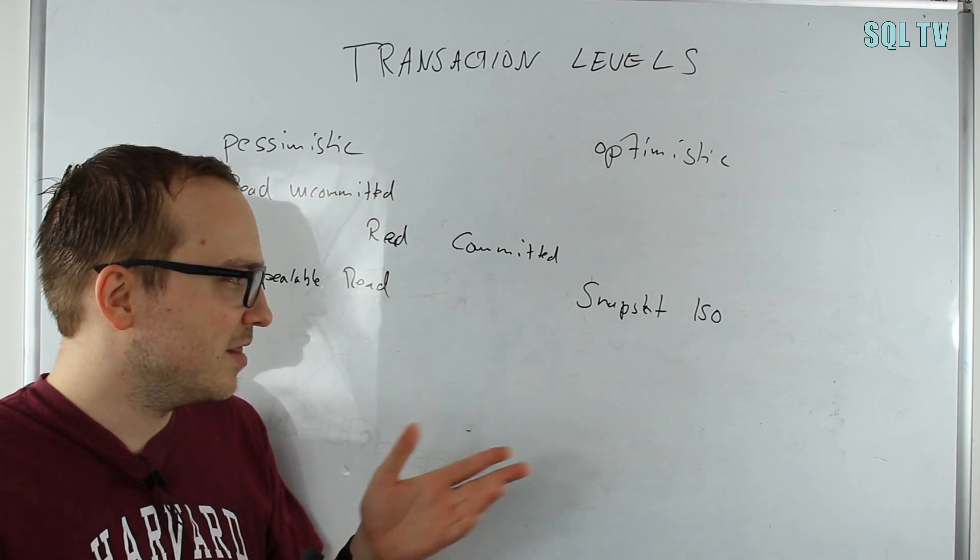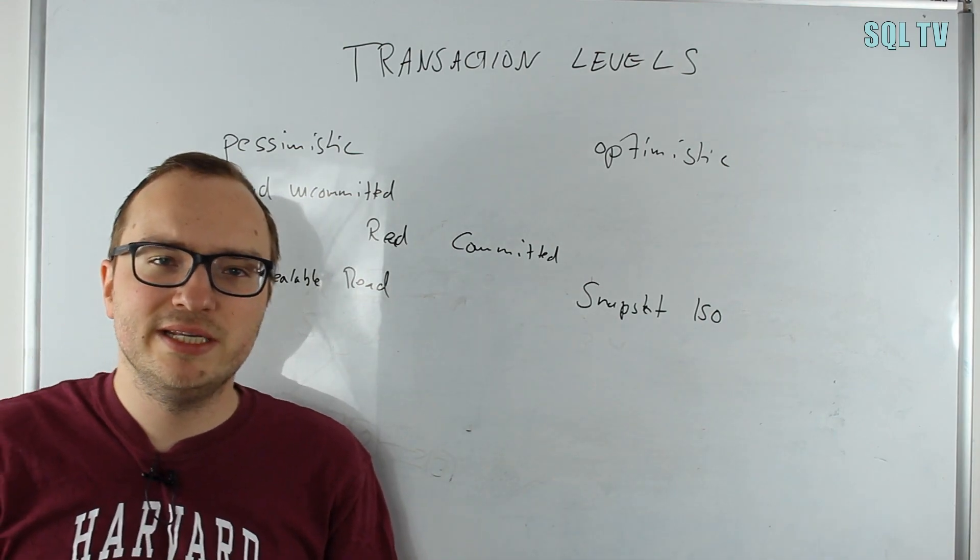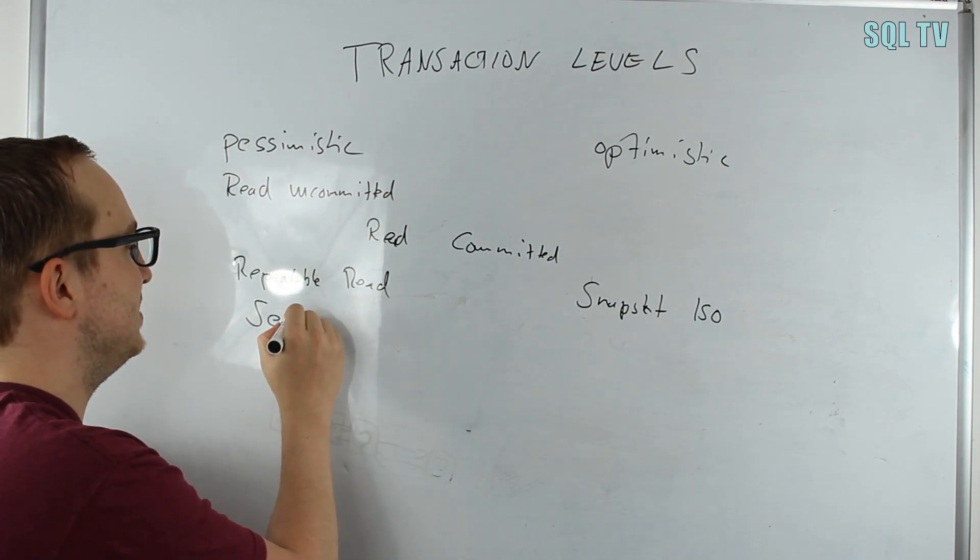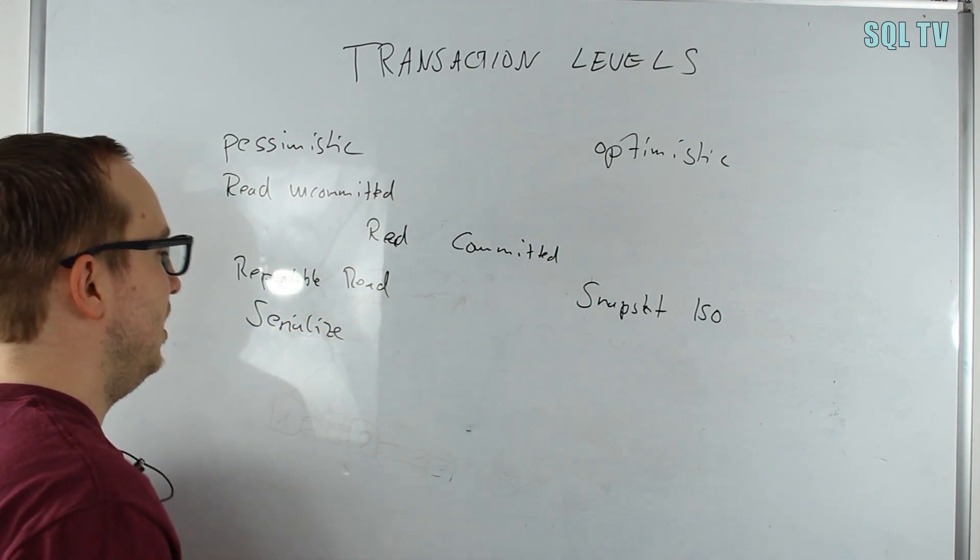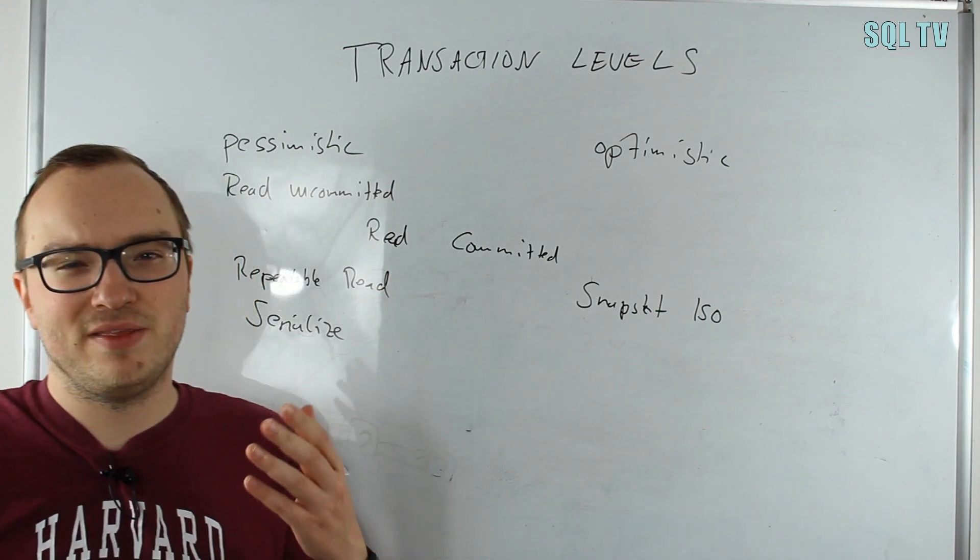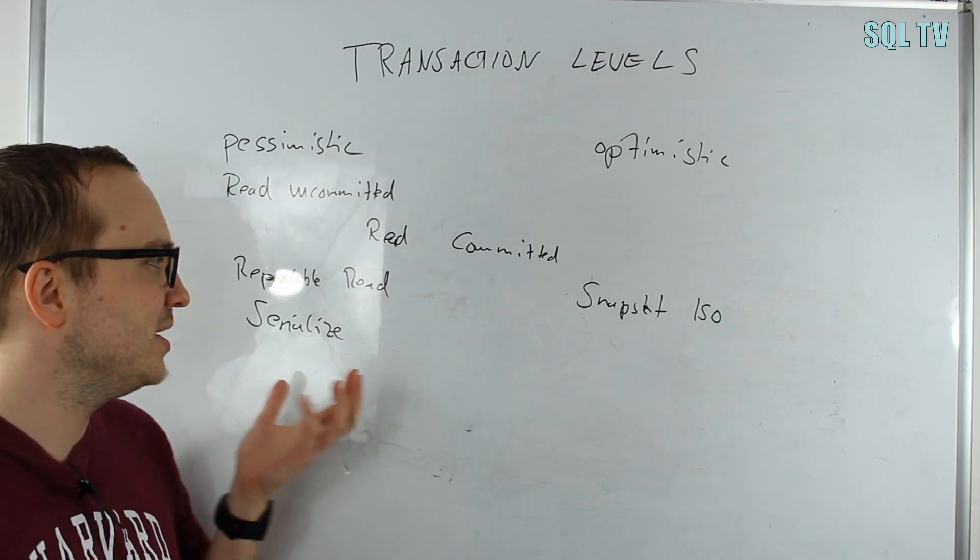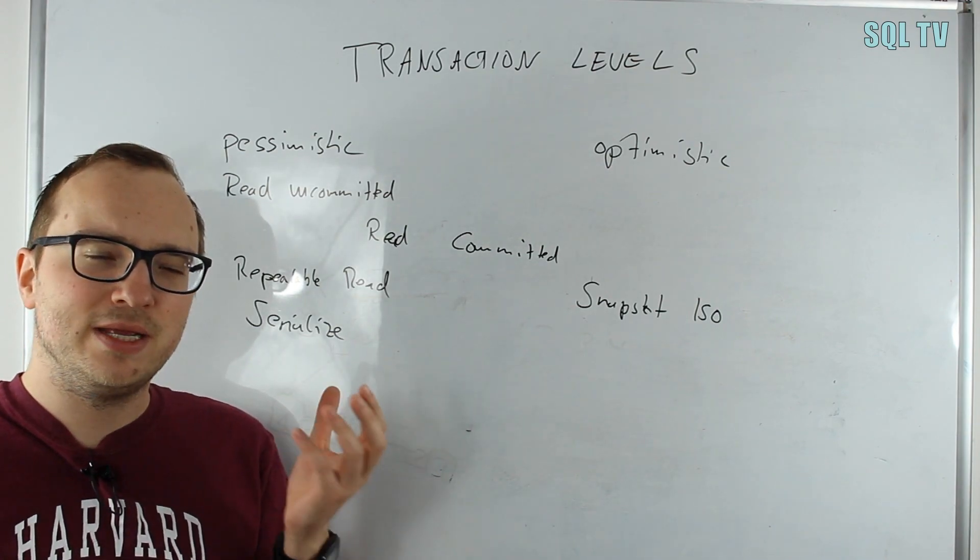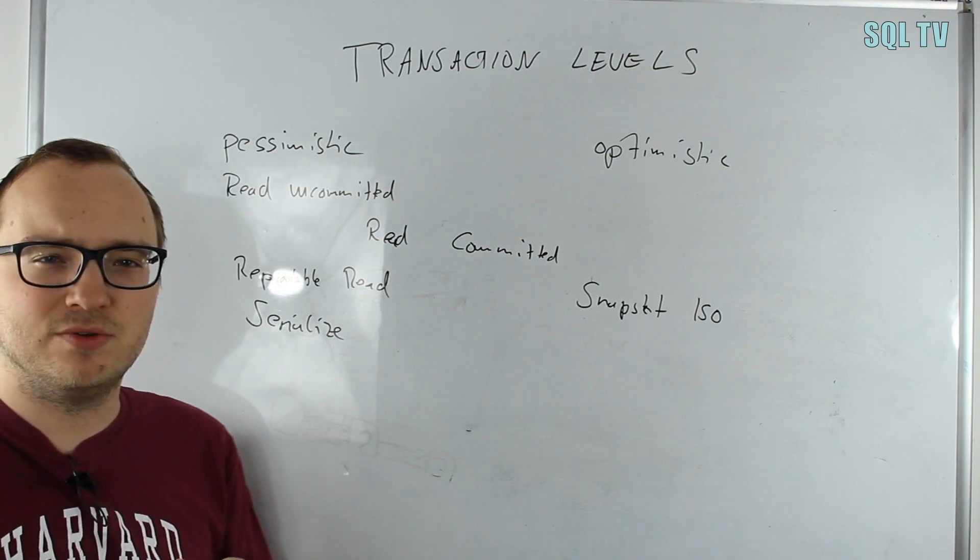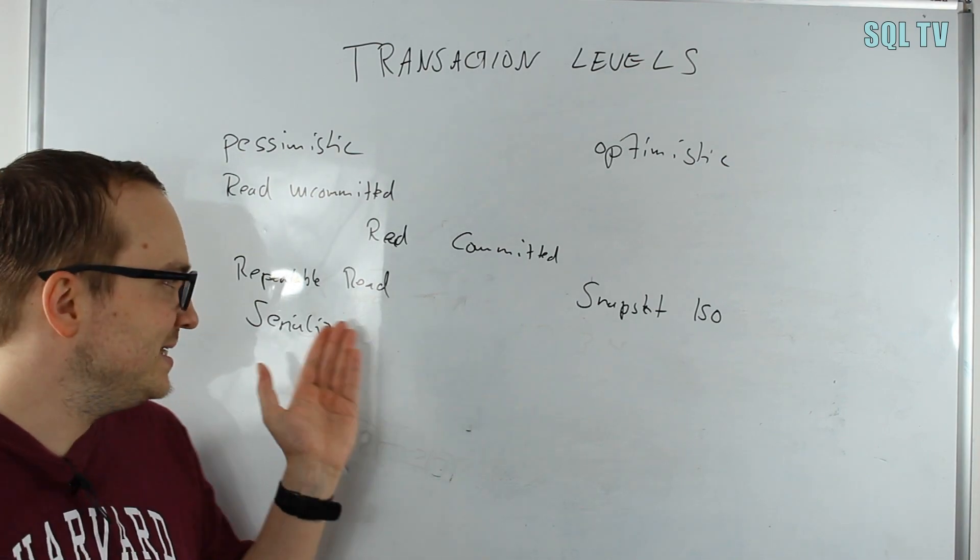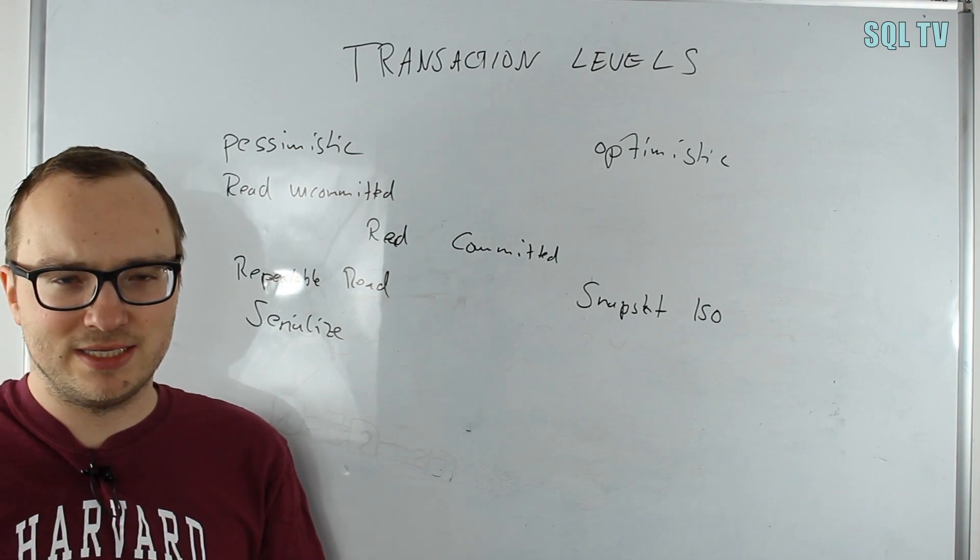Last but not least, we have the serialization level, which is also pessimistic. As you can think from the name, it is the most strict one. You basically serialize your whole application if you set your database or transactions to this level. It is basically like repeatable read plus something else, and I will demonstrate this on a quick example.